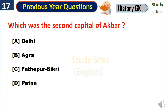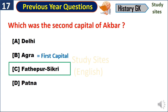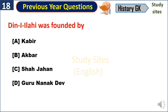Which was the second capital of Akbar? Fatehpur Sikri. Agra was the first capital of Akbar. Din-i-Ilahi was founded by Akbar.